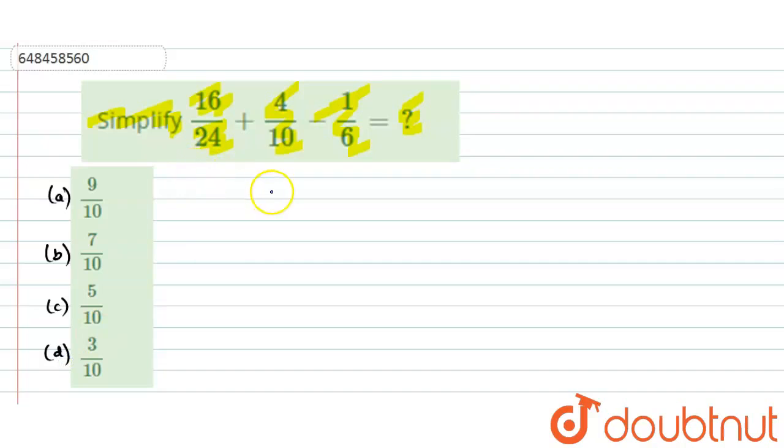Now, we have 16 divided by 24 plus 4 by 10 minus 1 by 6. Here the fraction of 16 and 24 is 8 in the table, so we can cancel it by 8. 8 into 2 is 16, 8 into 3 is 24. And 4 and 10 are 2 in the table, so 2 times 2 is 4 and 2 times 5 is 10.